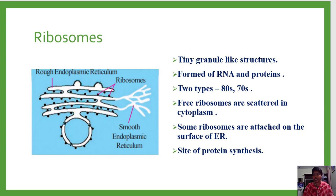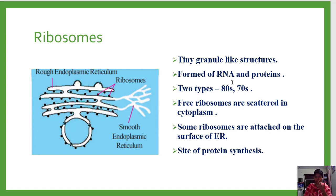Ribosomes are tiny organelles present in the cell. Their shape is circular or spherical. They are attached on the surface of the endoplasmic reticulum — the black dots you are observing on the surface of the endoplasmic reticulum are called ribosomes. These black color balls represent the ribosomes; their shape is that of tiny granules or spherical structures.